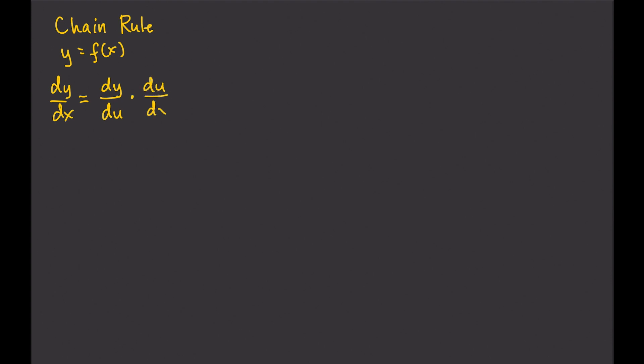You can see that we introduced a new variable u, and you'll see later how we figure out what u will be. Let's start with a simple example: y equals (x minus 3) cubed.